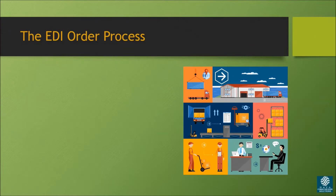In our previous video, we learned about the EDI order process, which begins when a customer sends a purchase order, or 850, to a seller.